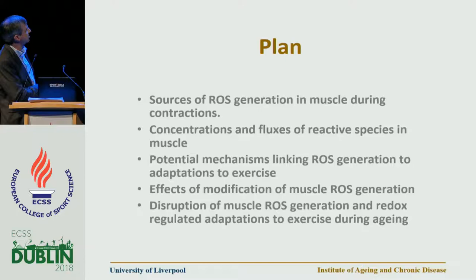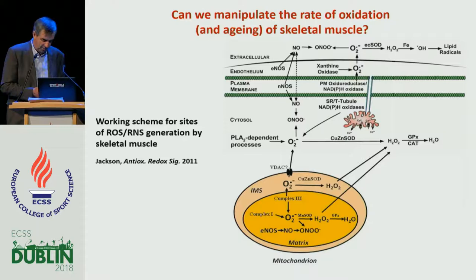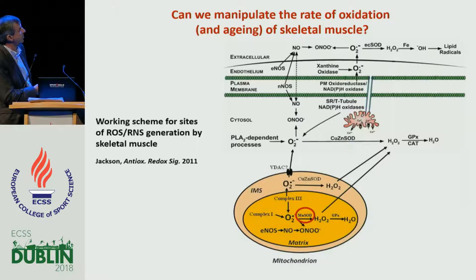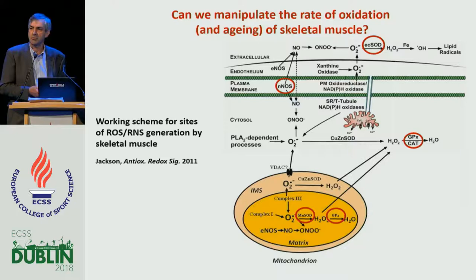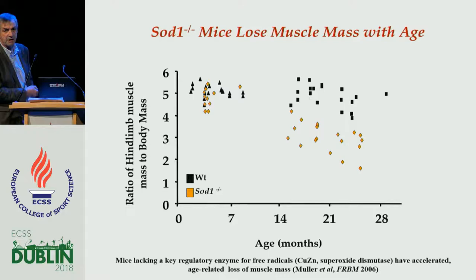We've talked about sources and concentrations. Now, what happens if we try to modify reactive oxygen species generation? We worked with groups in the US — originally John Faulkner, but more recently Susan Brooks, Alan Richardson, and Holly Van Remmen — to look at animals knocked out for various parts of the regulated pathway: manganese SOD, glutathione peroxidase, catalase knockouts, extracellular SOD knockouts, and overexpressors and knockouts for neuronal NOS. All of these were relatively uninteresting in terms of skeletal muscle metabolism and aging. But when we looked at copper-zinc SOD — SOD1 — we found a really quite interesting phenotype.